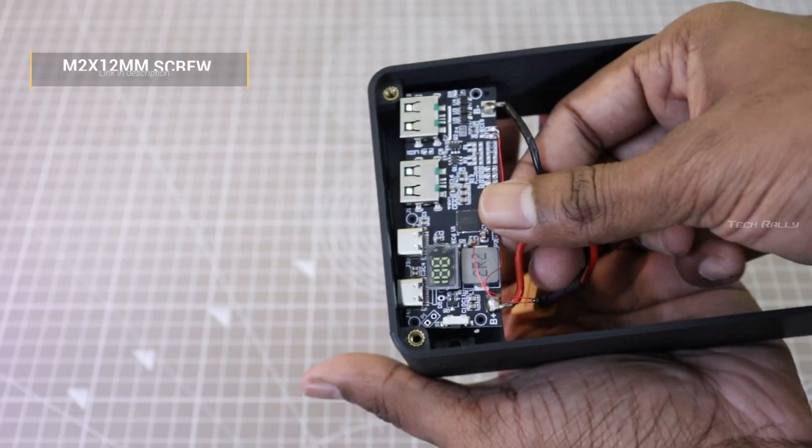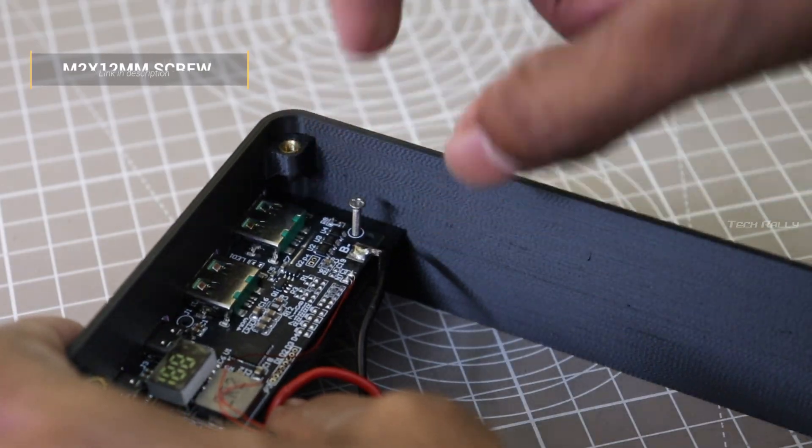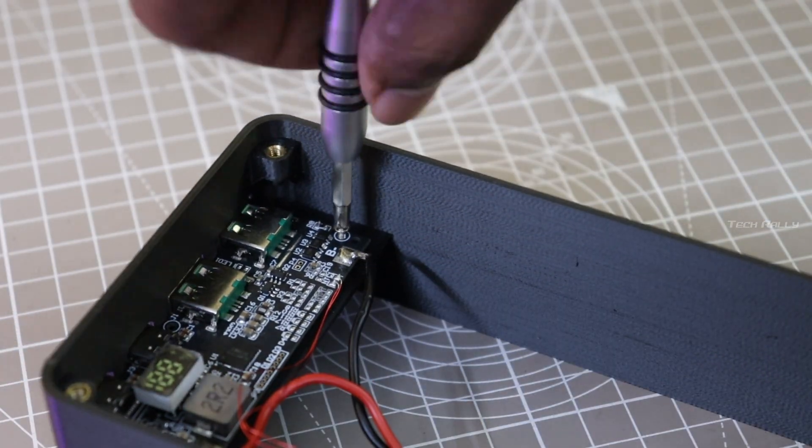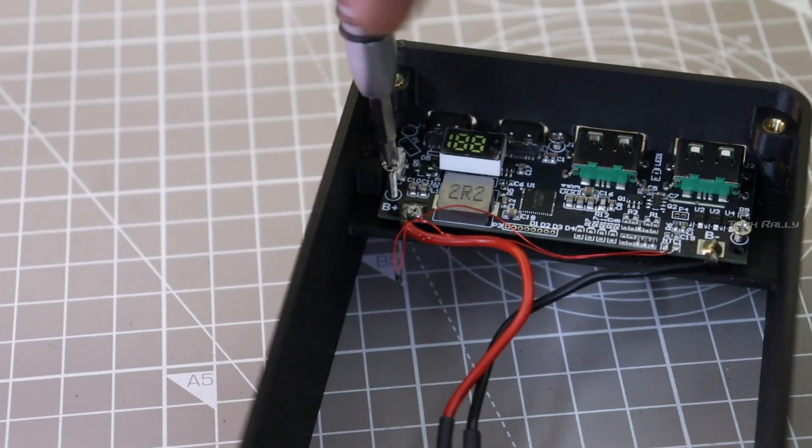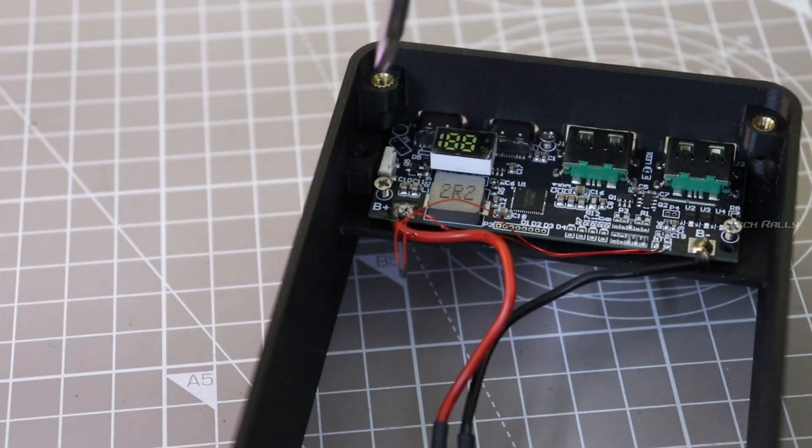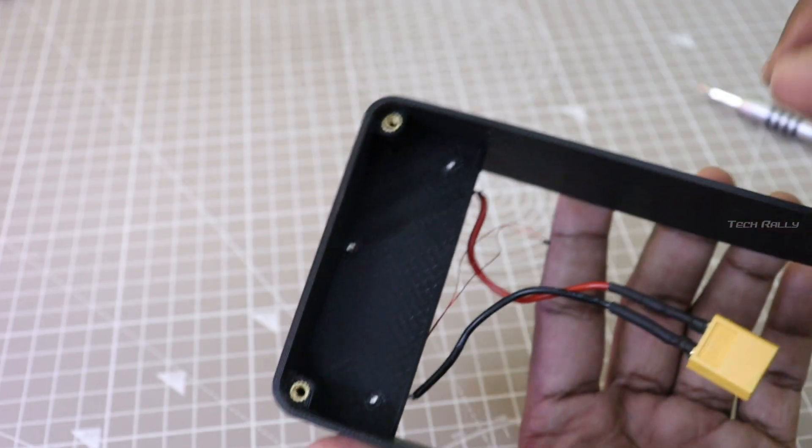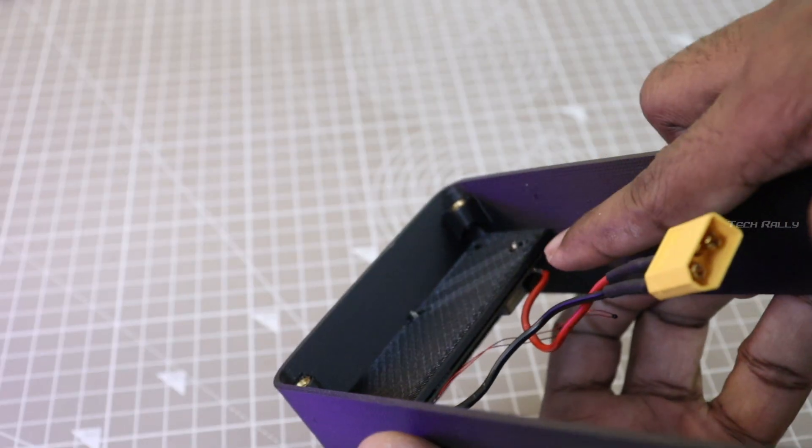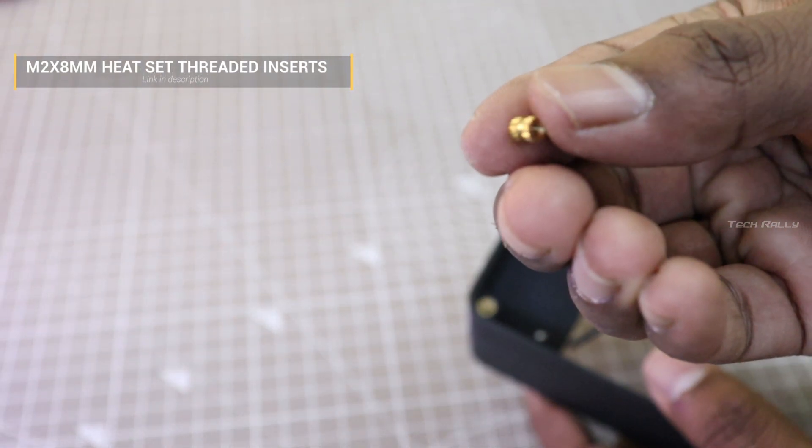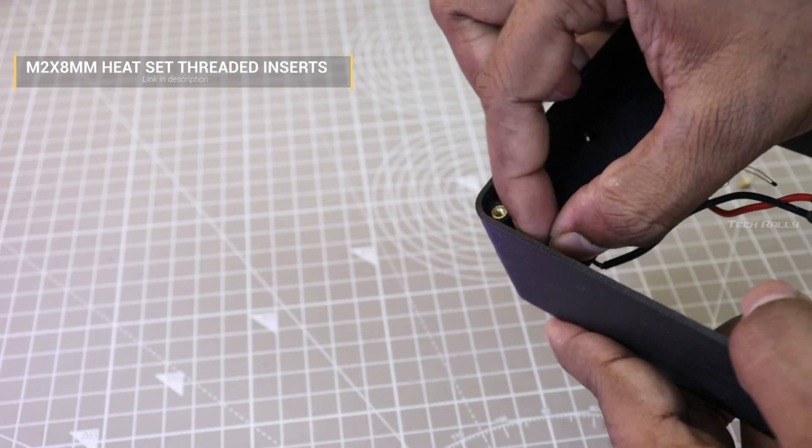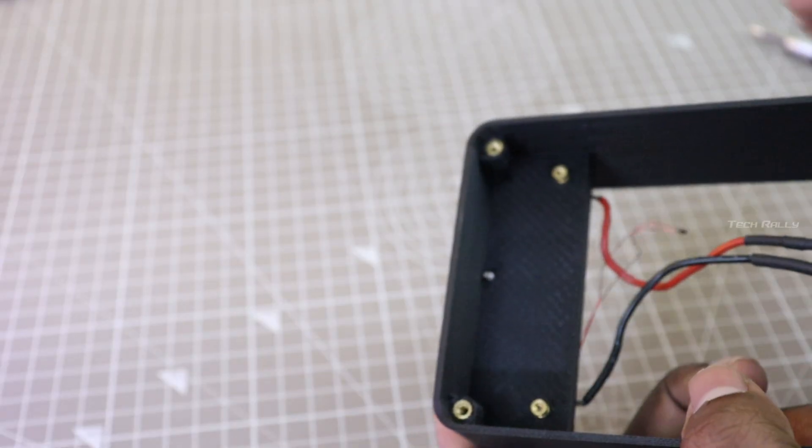Now let's place the module and install the 2mm screws. I was not able to install one screw because it was in the corner beneath the heat set nut. I believe 3 screws are enough. These 2mm screws are installed without any nuts. So I am going to install 2mm heat set nut at the bottom. Then I will tighten these screws again.